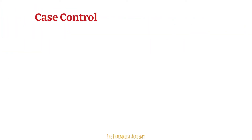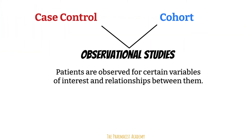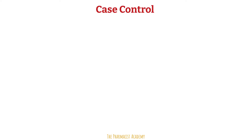Case control and cohort studies are both observational studies. Observational studies do not involve assigning patients to specific groups or giving patients experimental medications. Instead, patients are just observed for certain variables of interest and the relationships between them.